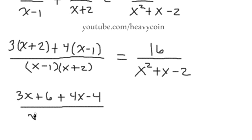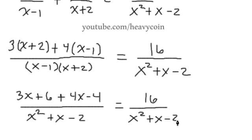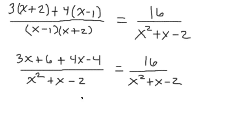So x times x is x squared. x times 2 is 2x. Then we have negative 1 times x that becomes just x. Right, 2x minus an x is just an x. And negative 1 times 2 is negative 2.